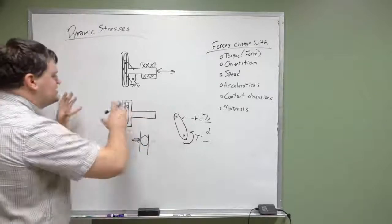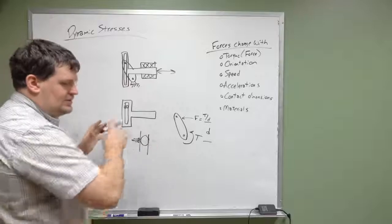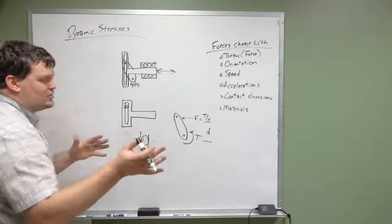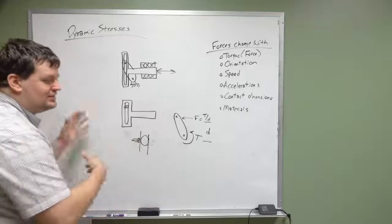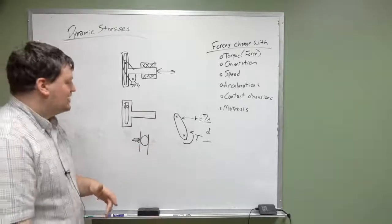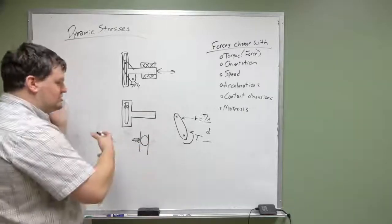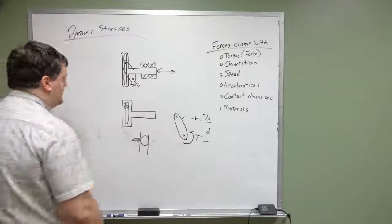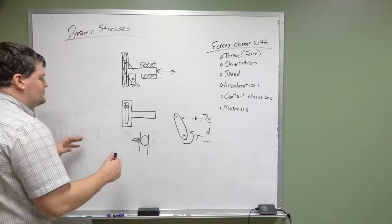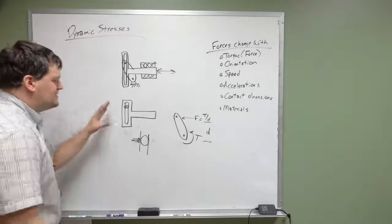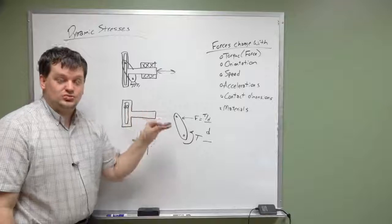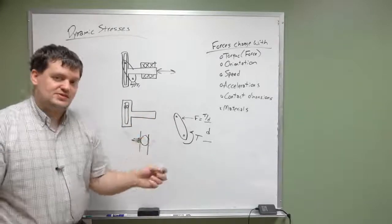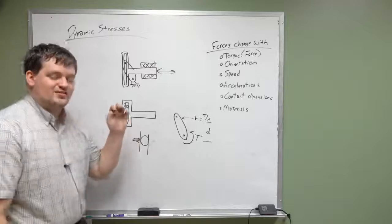As we look at the scotch yoke mechanism moving forward and backward, accelerating one way then the other, if the entire mechanism were made out of aluminum it would experience different kinds of stresses than if it were made out of cast iron. Some of it has to do with contact, but a lot has to do with the fact that aluminum is much lighter than cast iron.